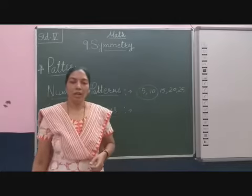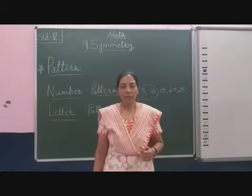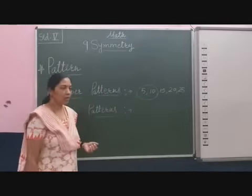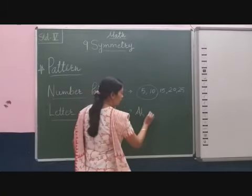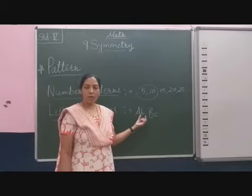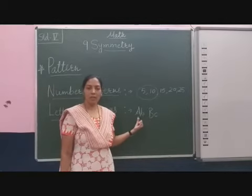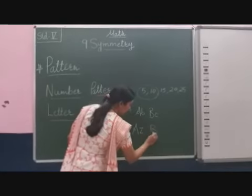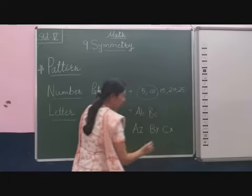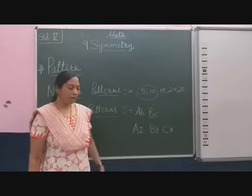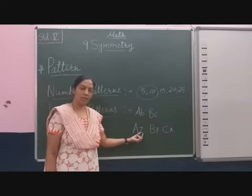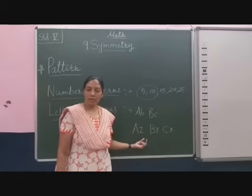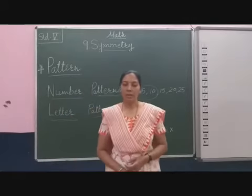This is the example of a number pattern. Now the second thing is the letter pattern — letter means alphabetical letters A to Z. Sometimes you have seen that capital A is given, then small p, then capital B, then small c. Here two letters are used — the first letter is in capital and the second one is in small. You can also observe that the first letter increases in order and the second one is in decreasing order. This kind of pattern we call the letter pattern.